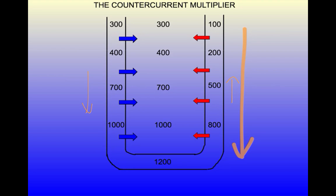The easiest way to understand exactly how the CCM creates a medullary interstitial gradient is to pretend that there is no gradient to start with and to plug in the numbers and the processes. So let's do that.